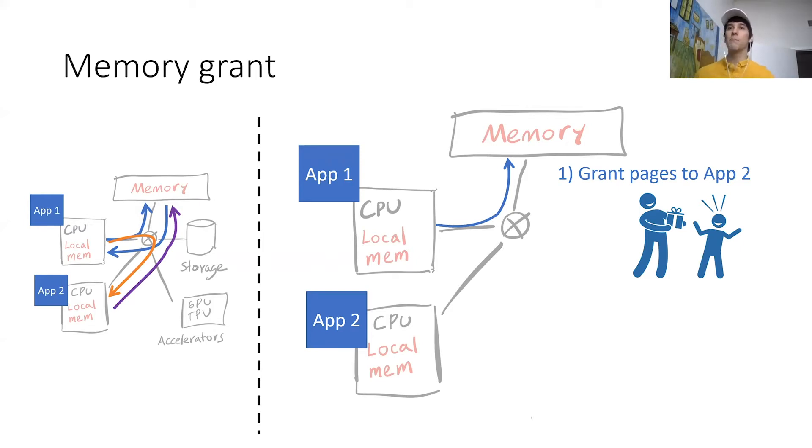And essentially what this does is it tells the memory node to reconfigure the page permissions so that app2 can now access those pages, and then this memory node will notify the operating system of the server that's running app2 so that it knows that new pages are available, and then it can just signal the application to let it know that the pages are available. The result of this is that we have much fewer data movement, and also another thing to notice is that these messages are small control messages, as opposed to the big data that the application could be sending on the left side.